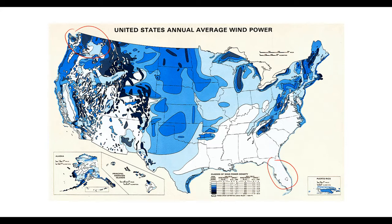Every spot in the US requires a different formula for power generation. In Washington, you might consider another dam, more wind, or even tidal energy. In Florida, a natural gas plant might make the most sense. In the middle of the country, maybe nuclear. At this point it's safe to say we shouldn't be building coal plants at all. The wind map helps identify where wind generation makes sense.